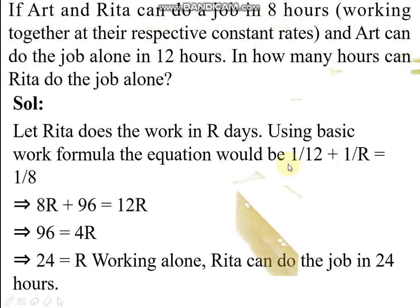So, 1 by 12 plus 1 by r equals 1 by 8. On cross multiplying, 8r plus 96 equals 12r, so r equals 24. Working alone, Rita can do the job in 24 hours.